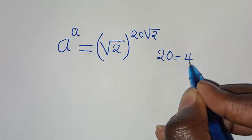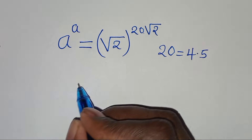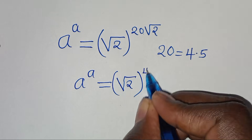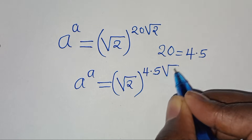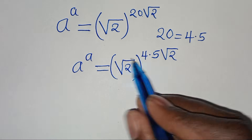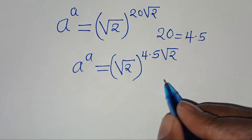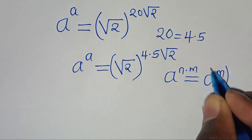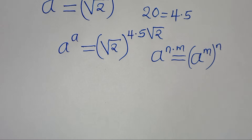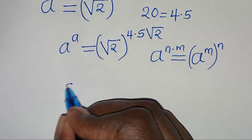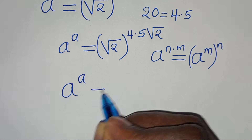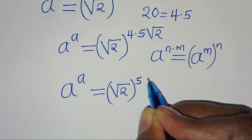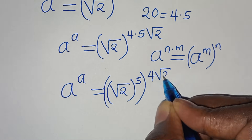We can express 20 as 4 multiplied by 5. So a to the power of a is equal to square root of 2 raised to the power of 4 multiplied by 5 multiplied by square root of 2. Square root of 2 to the power of 4 times 5 square root of 2 is in the form of a to the power of n multiplied by m, which we can express as a to the power of m raised to the power of n. Applying this exponent property, a to the power of a equals square root of 2 raised to the power of 5, then raised to the power of 4 multiplied by square root of 2.